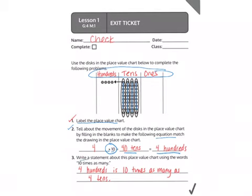Write a statement, number three. So four hundreds is ten times as many as four tens. I'm taking the bigger number. Four hundreds is ten times as many as the original four tens.